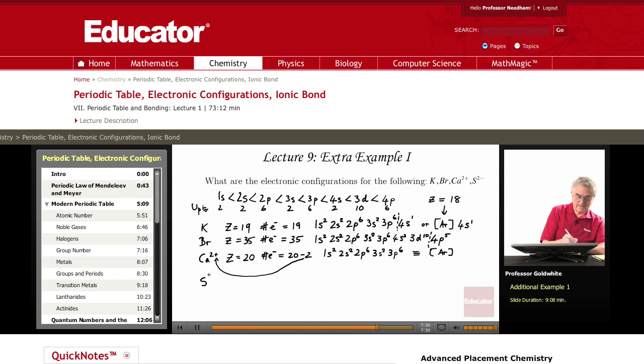And the next ionic example, S2 minus, is strikingly similar. Sulfur has an atomic number of 16. The number of electrons we need to cope with is 16 plus 2. Plus 2 because we've added 2 electrons to the neutral sulfur atom to make the sulfide anion, S2 minus.